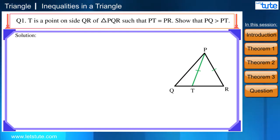And the solution is something like this. First, we will start with the given part. We will write PT is equal to PR. We have to prove that PQ is greater than PT. And here is the proof part.